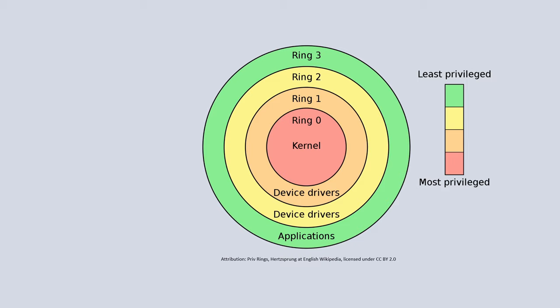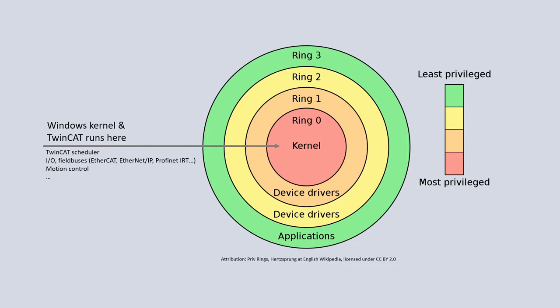In Windows and most other operating systems, there is a distinction between code running in user mode and code running in kernel mode. A CPU has modes of operation called rings, which specify the type of instructions and memory available to the running code. There are four rings available, although Windows generally only uses two: ring 0 and ring 3. Ring 0, also known as kernel mode, has direct access to the hardware. In kernel mode we find the TwinCAT scheduler, our tasks and programs, and various other real-time critical parts like input and output communication.